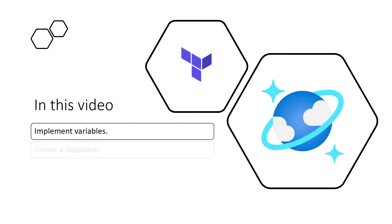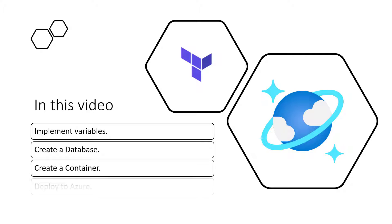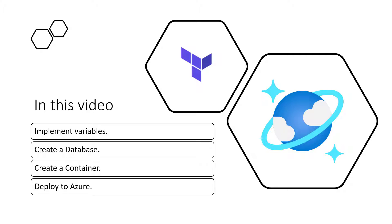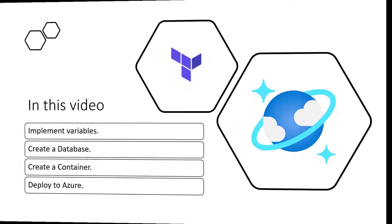In this video, we'll carry on from our last video and implement variables into our existing configuration file. We will then create our database and container for our Azure Cosmos DB account using Terraform, before deploying those resources to Azure.